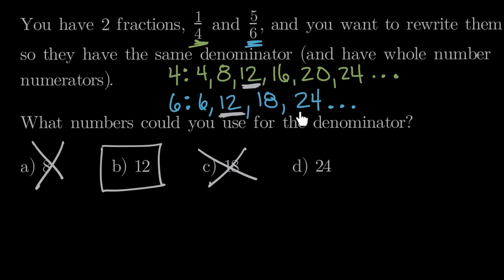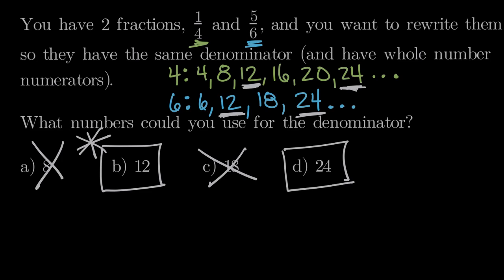And 24 was the last number we wrote on both lists, so yes — 24 could be a denominator for 4ths and 6ths. So we could use either 12 or 24. There are many more common denominators we could use, but from these choices, 12 or 24 work. A note: lots of times people like to use the smallest one — the least common denominator — which in this case is 12. It makes sense because it's easier to do computation with smaller numbers, though you don't absolutely have to use the smallest one.